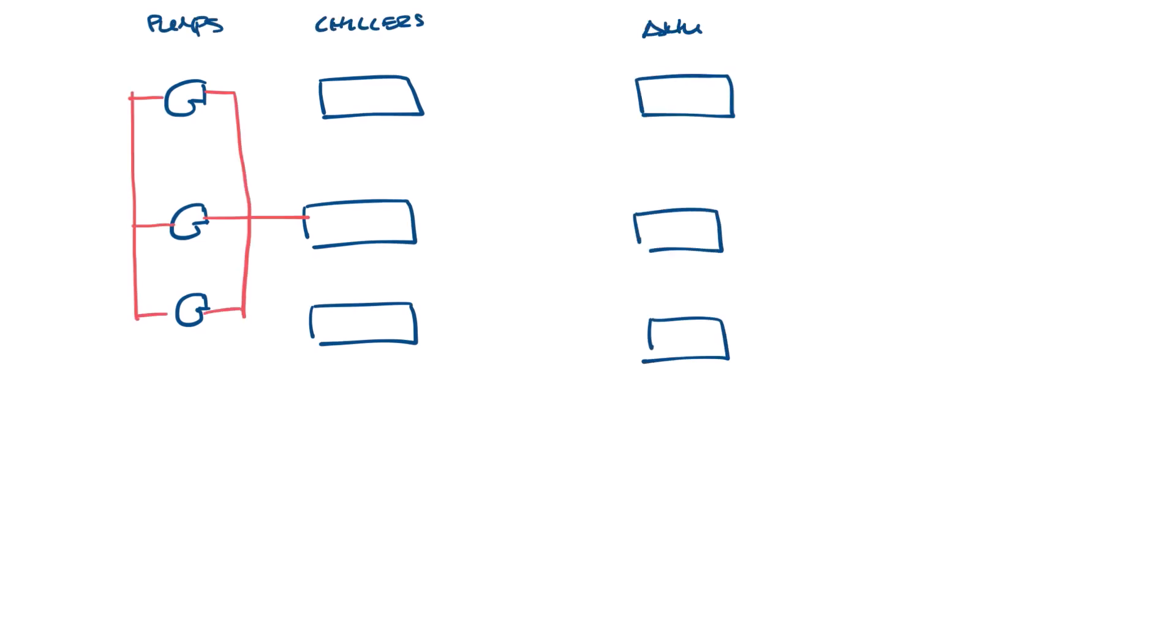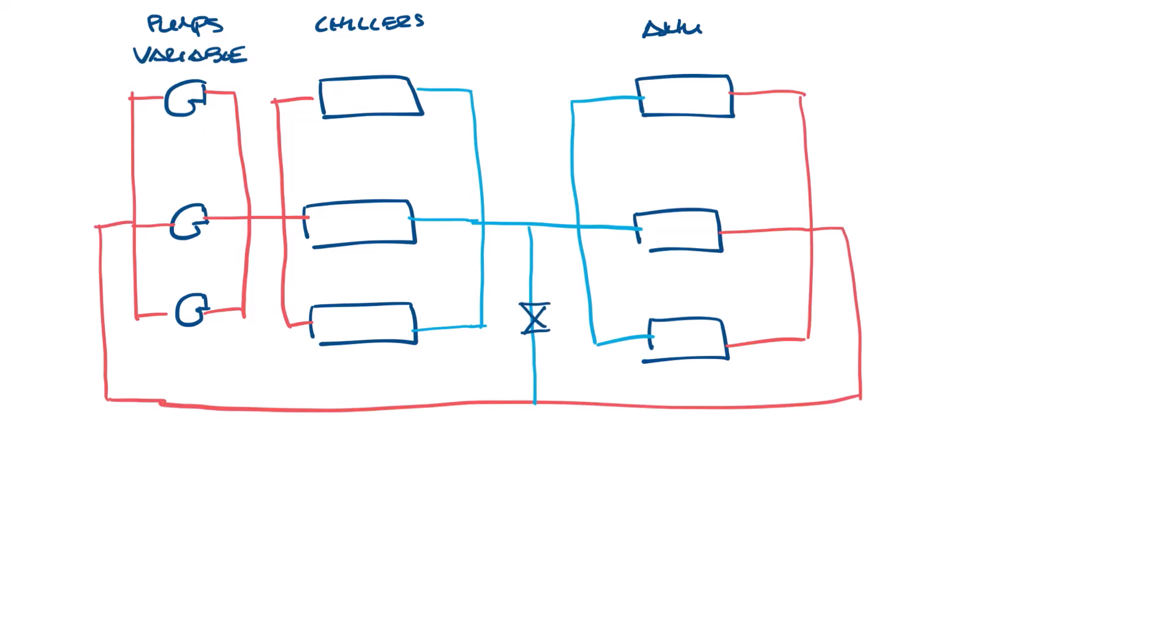So let's move this over and draw it. We have our primary pumps, chillers, and air handlers. And then let's draw in the water flow and then the decoupler. But the decoupler in this system will have a control valve on it. So this is probably one of the most common systems you'll see, followed by the primary secondary system.